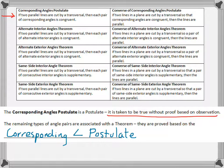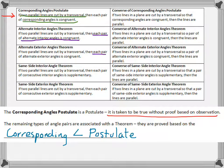The corresponding angle postulate says: if two parallel lines are cut by a transversal, then each pair of corresponding angles is congruent. That's the relationship we already looked at in class. Then all the other theorems — alternate interior angles theorem, alternate exterior angles theorem — state those same relationships: that each pair of alternate interior angles is congruent, or that alternate exterior angles are congruent, or that same side interior angles are supplementary.